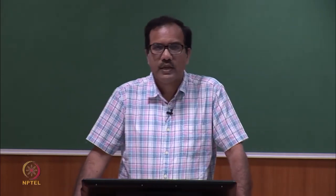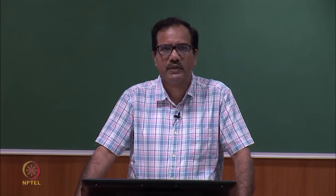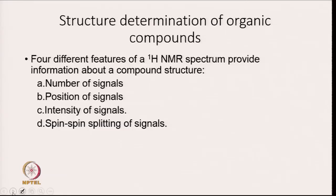In the last lecture I discussed how four different features of NMR can be used to get information about a compound structure. Those four features are: number of signals, position of signals, intensity of signals, and spin-spin splitting of signals.